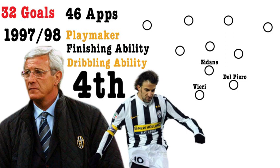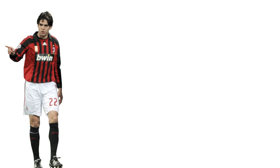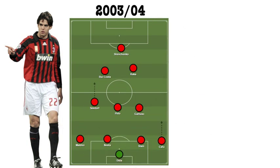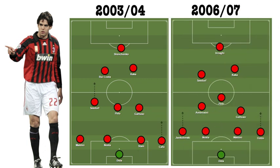A more modern example of the classic trequatista could be Kaka, who played as one of the two advanced midfielders in a 4-3-2-1 Christmas tree system. In the 2003-2004 Scudetto winning season he played alongside Rui Costa, and in the 2006-2007 Champions League winning season he played alongside Seedorf in that role. Like Maradona and Del Piero, who also played as one of the two advanced midfielders behind a main striker, Kaka was a trequatista who'd be positioned higher up the pitch and given more freedom than the enganche-type advanced playmaker next to him — either Seedorf or Rui Costa. Kaka had the passing, dribbling and finishing ability to perform this role excellently.